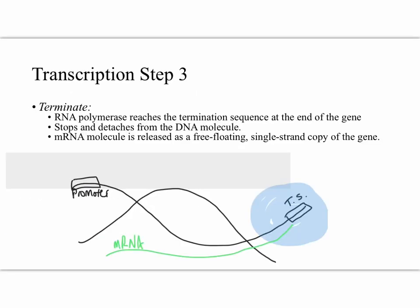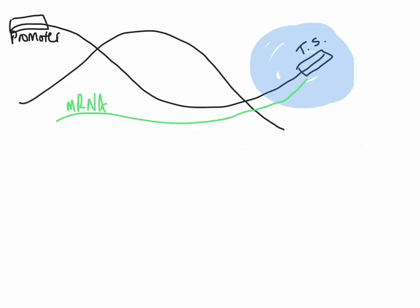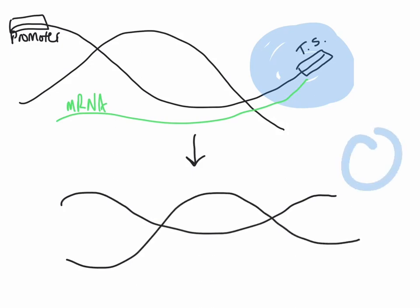The third step of transcription is termination. During this step the RNA polymerase reaches the termination sequence of the gene. This signals the end of transcription. The RNA polymerase will be released and the mRNA will also be released.